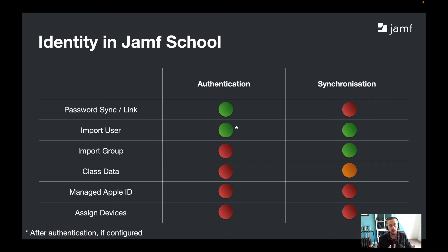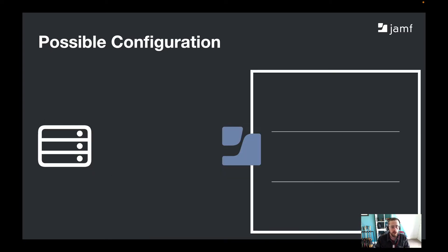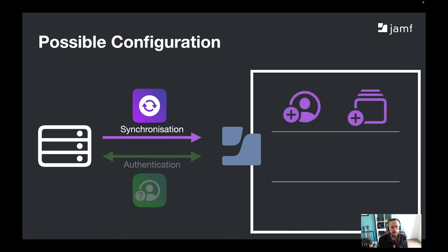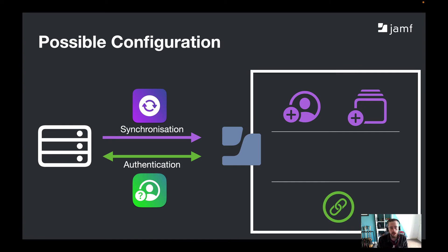When you would normally link up to an LDAP service or a cloud identity provider, most other systems give you both functionalities within one configuration, whereas in Jamf School we split them out — and there are good reasons for that. Essentially, this is what a possible configuration could look like: we have our LDAP server or identity provider on the left and our Jamf School server on the right. We do the synchronisation, importing users and groups, and then set up authentication, which gives us that live link with the password. With all of that information, we can pre-build smart groups and create zero-touch workflows.